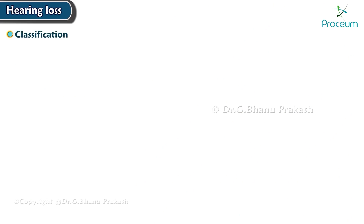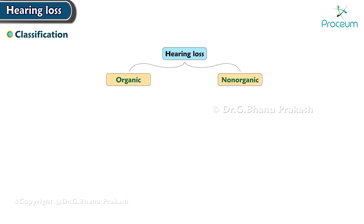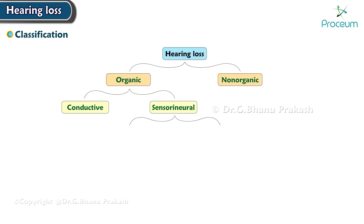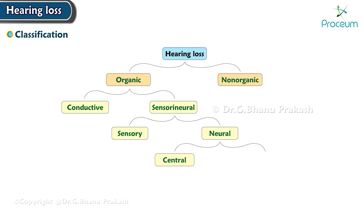Hearing loss is classified into organic and non-organic. Organic is further classified into conductive and sensorineural. Sensorineural has two components: sensory and neural. The neural component has central and peripheral pathways.